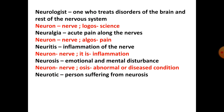Then we have neuritis. Neuron meaning nerve, and itis — I-T-I-S — itis ka matlab inflammation. Inflammation kya hota hai? Jab aapki nasein moti ho jaati hain, sore ho jaati hain, dard karne lagti hain. Toh usse hum kehte hain inflammation of the nerve — yaani ke neuritis.